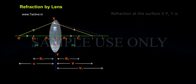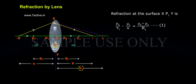Refraction by lens. Refraction at the surface X, P1, Y is Mu2 by V1 minus Mu1 by U equals to Mu2 minus Mu1 by R1, equation 1.